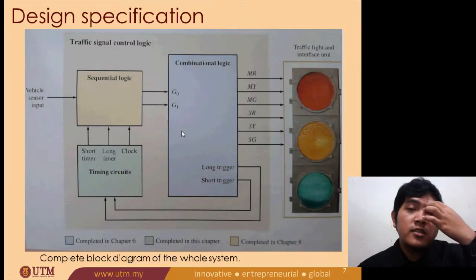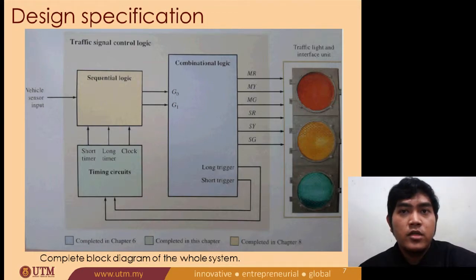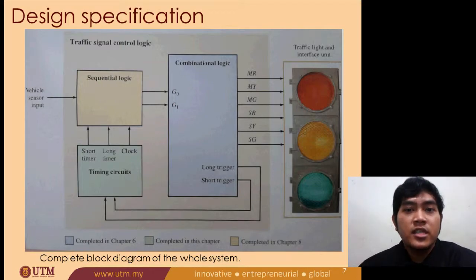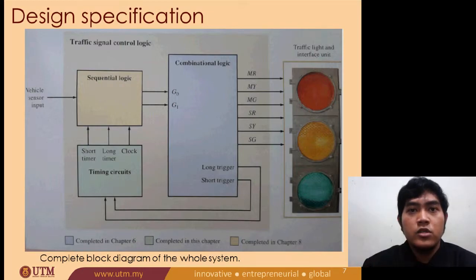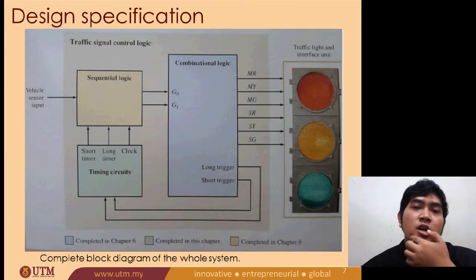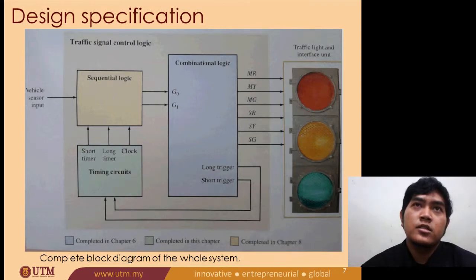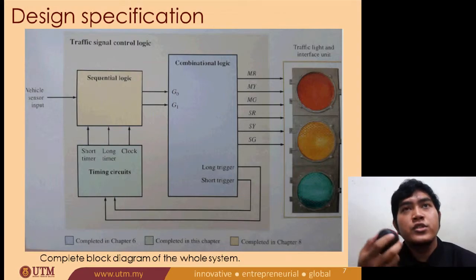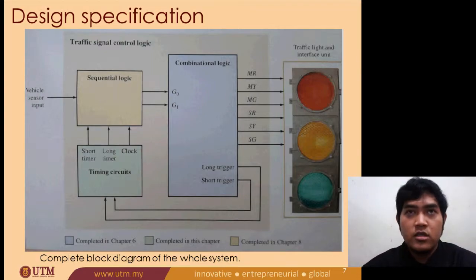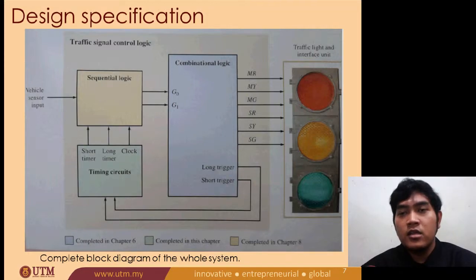Thanks Zikri. Now I will go into further detail about our design specification. This is the whole block diagram of the system. In the block diagram, we have sequential logic, timing circuit, and combinational logic. The sequential logic shows the input for the vehicle sensor, the timing circuit produces different time intervals — a 25-second clock interval and a 4-second clock interval — and the combinational logic gives the output of which traffic light colour will turn on.